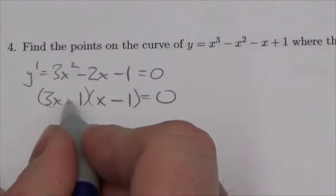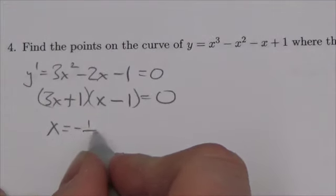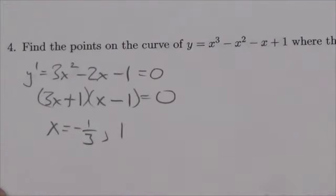Well, yeah, as long as I make this negative and make this positive. So this is going to occur where x is equal to negative 1 third, or where x is equal to positive 1.